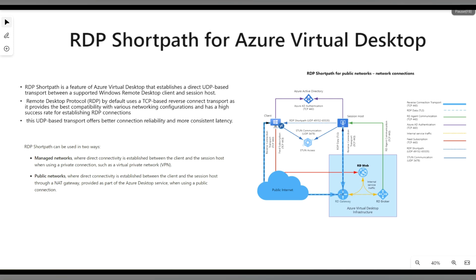When you compare UDP with TCP, UDP provides better connection reliability and more consistent latency, which helps deliver a better user experience with reduced latency and round trip time.